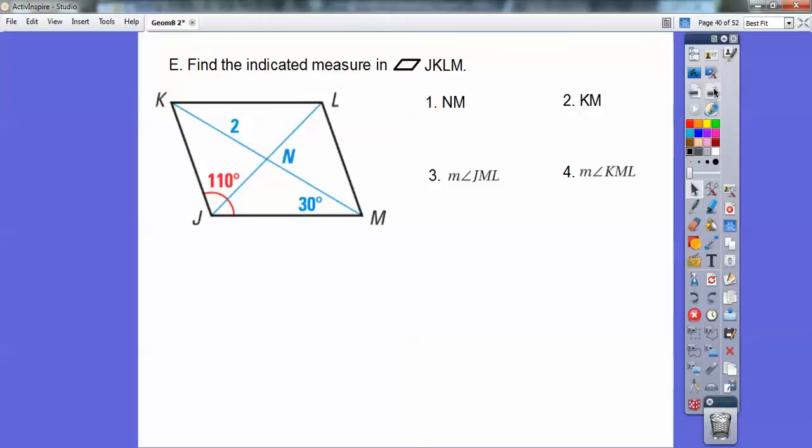So find the indicated measures in this parallelogram JKLM. I've got the parallelogram right here. First thing I'm going to notice is the diagonals bisect each other. So that side's 2, this side's 2 right there. So that's what NM is, it's 2. And then this says KM. Well, KM is the whole diagonal, so the whole thing. So 2 plus 2 equals 4. Segment addition postulate says I can do that.